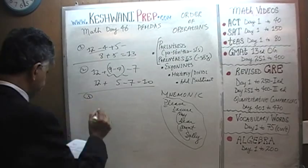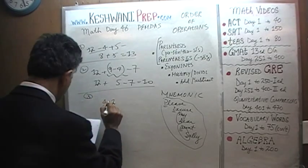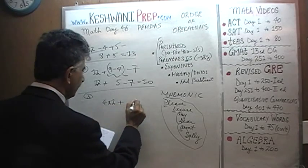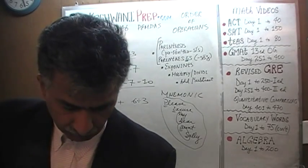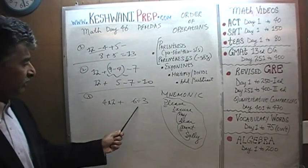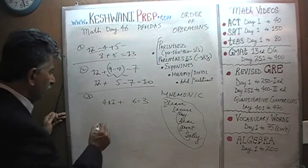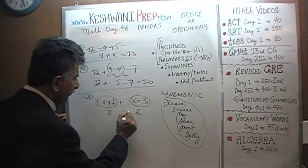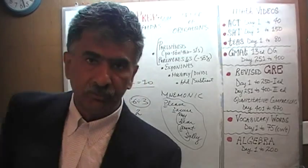Number 3: 4 times 2 plus 6 divided by 3. We have to make sure that we do our multiplication and division first before we worry about addition. 4 times 2 is 8, and 6 divided by 3 is 2. So what we get is 8 plus 2, which is 10.